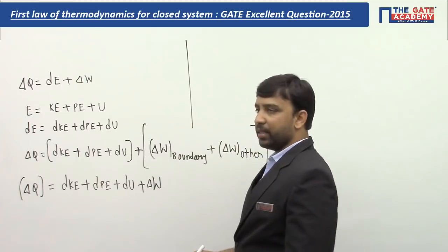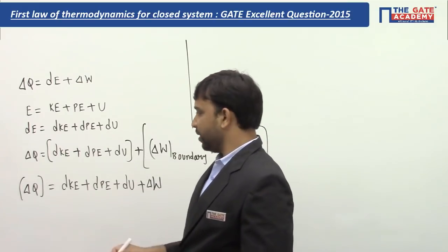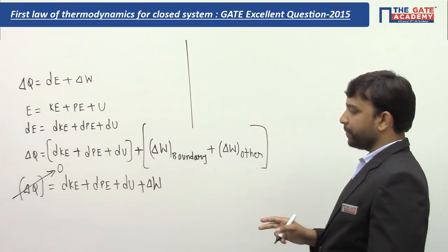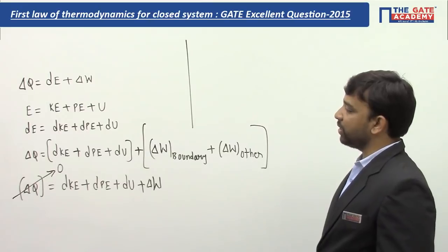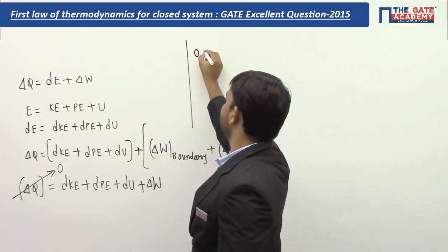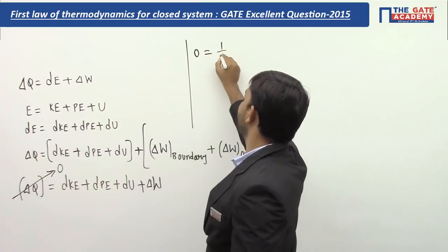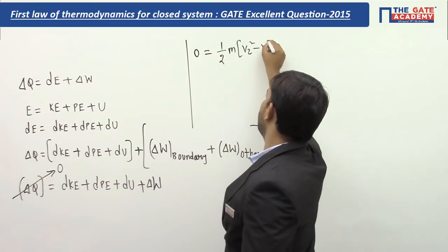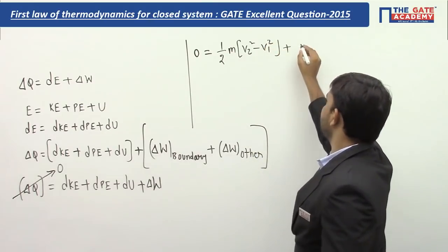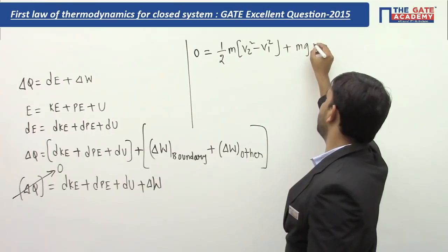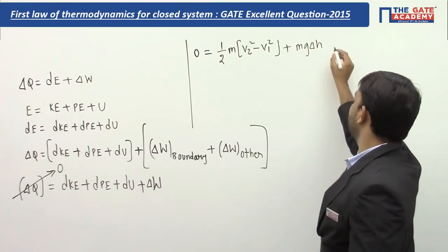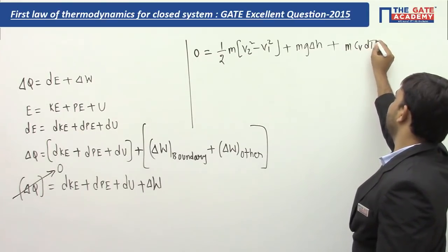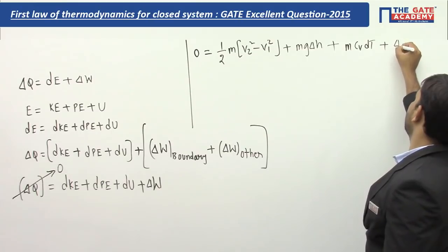Since the process is adiabatic, there are no heat interactions between the system and surroundings, so delta Q = 0. The equation becomes: 0 = (1/2)·m·(v2² − v1²) + m·g·Δz + m·Cv·ΔT + delta W.